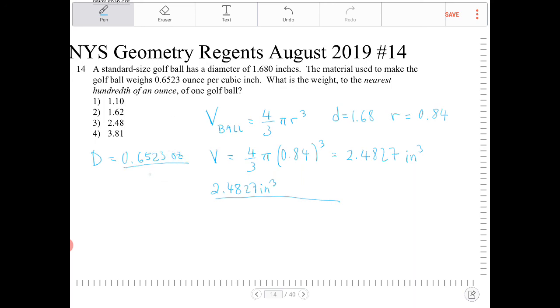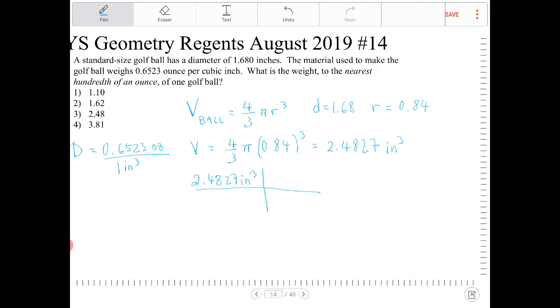So 1 inch cubed. So in order for me to cancel out the inches cubed in the volume that I just found, I have to have 1 inch cubed in the denominator. And I'm going to place 0.6523 ounces in the numerator.